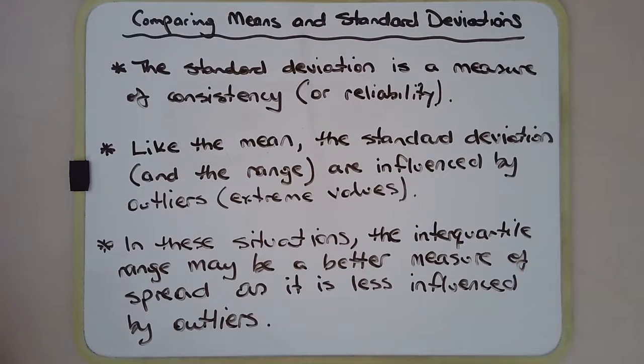We've seen already that the mean or average—it's the mean that we're talking about—just comparing the means is not enough. It's possible that two teams could have exactly the same mean but their standard deviations could be wildly different. Obviously one team then would be more consistent than the other or more reliable than the other.